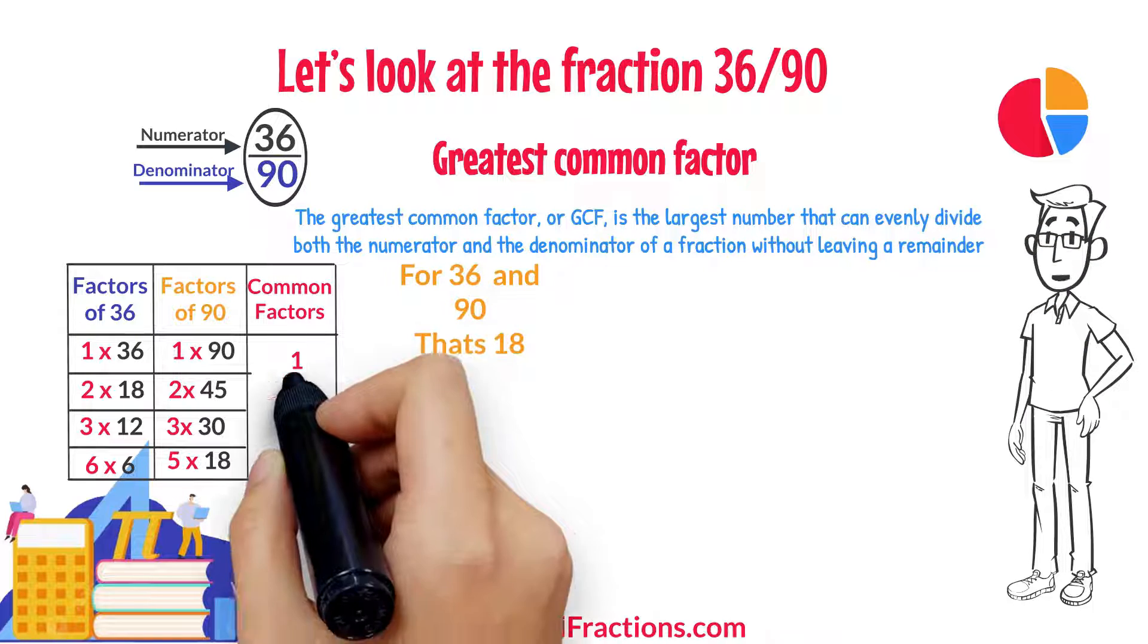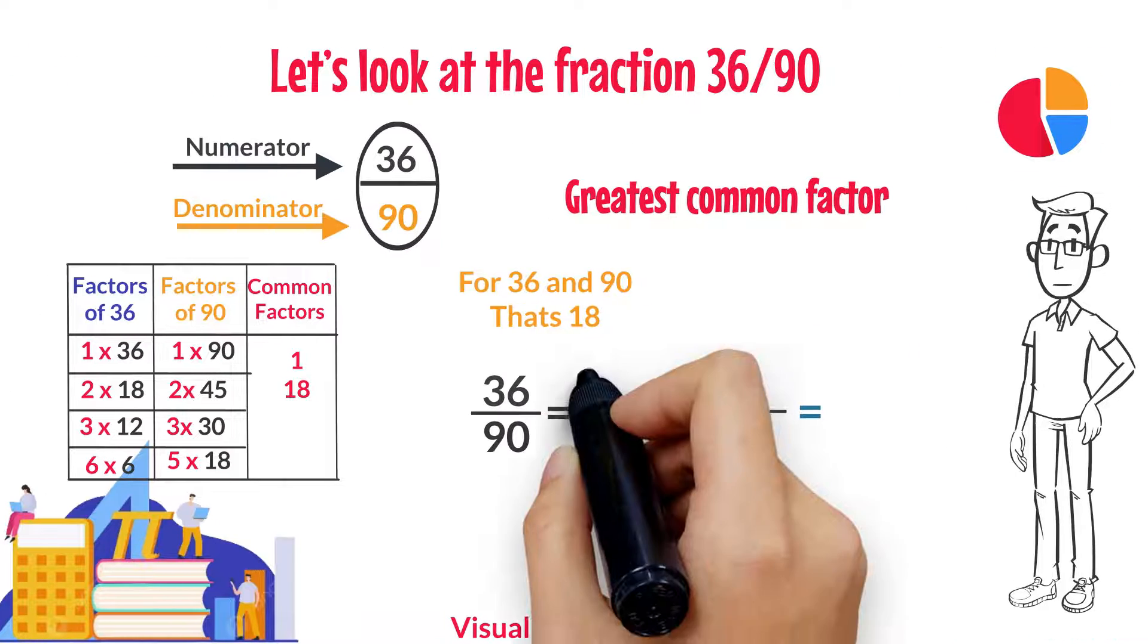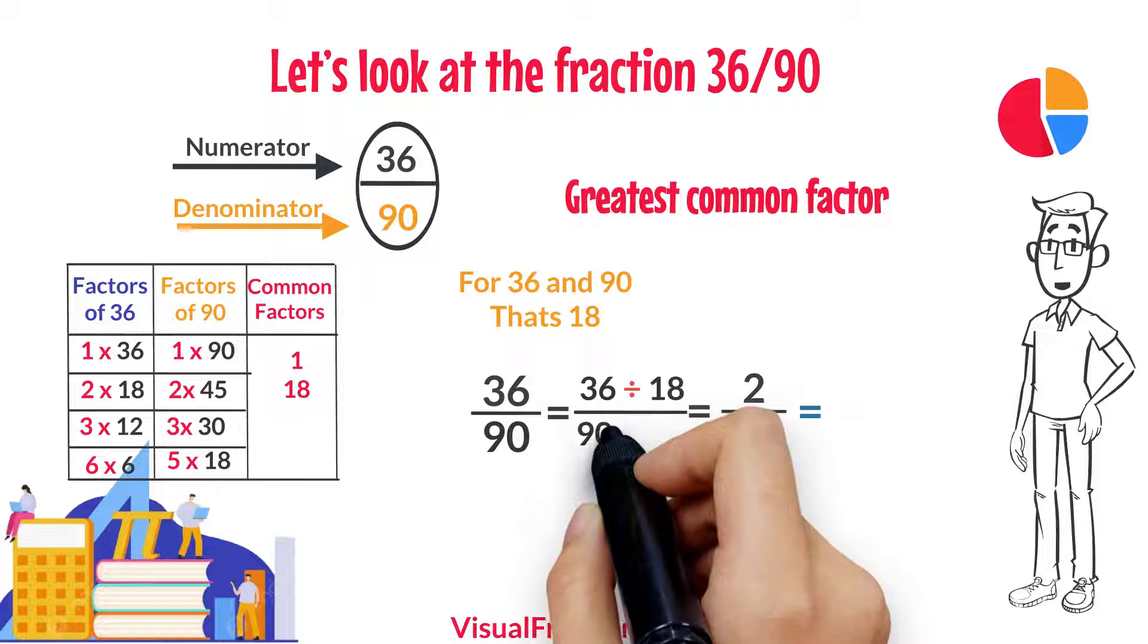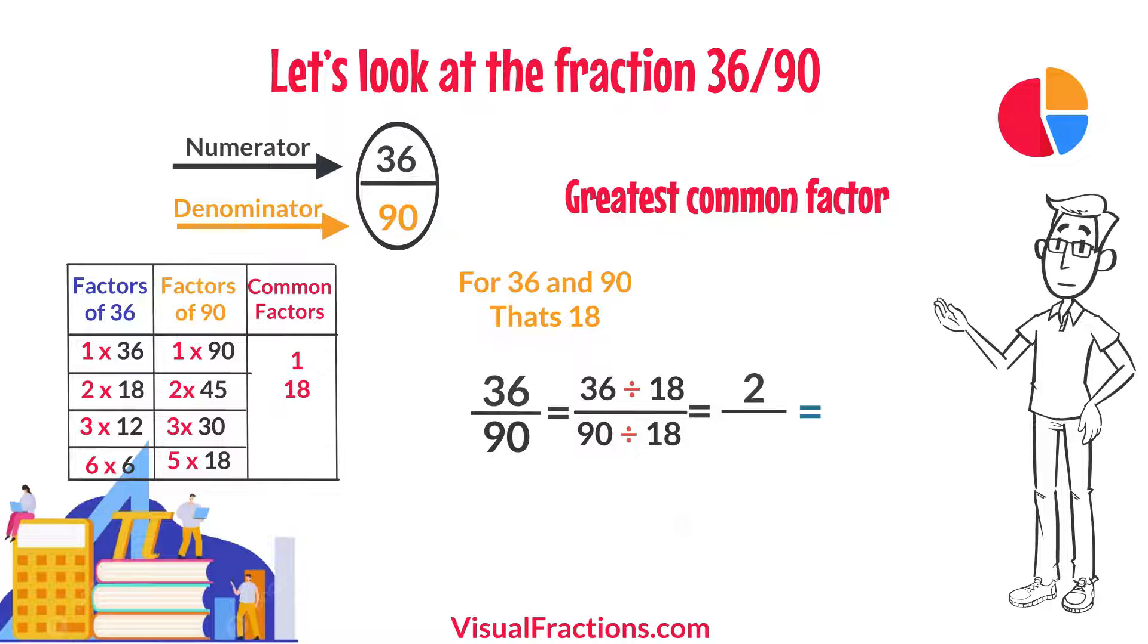For 36 and 90, that's 18. We start by dividing 36 by 18, which gives us 2. Then we divide 90 by 18, which results in 5.